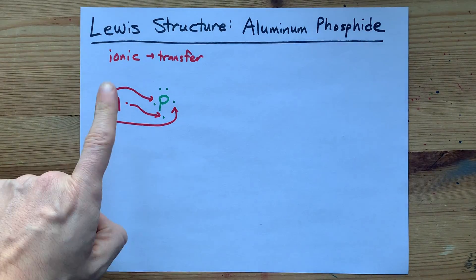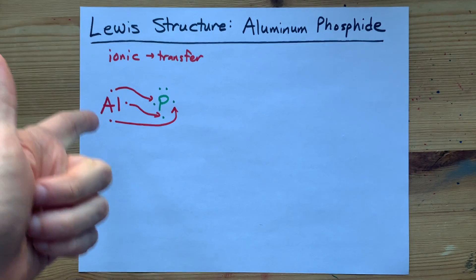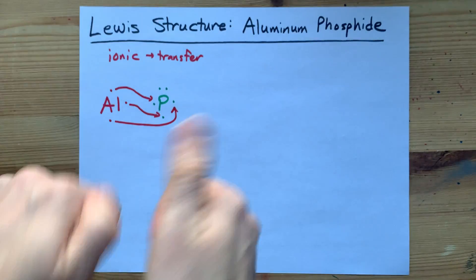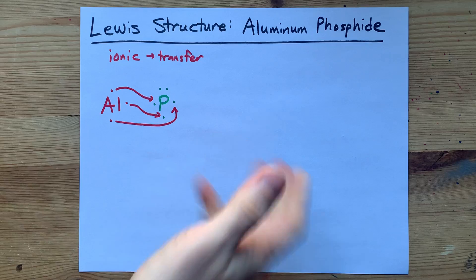Perfect. Aluminum gave away all three of the electrons in what was its outer shell. Also perfect. This is it.